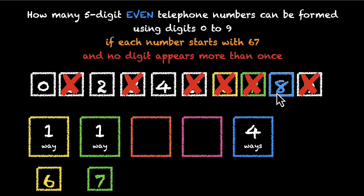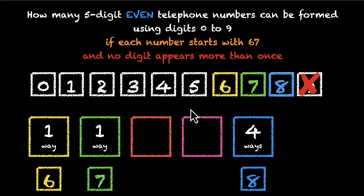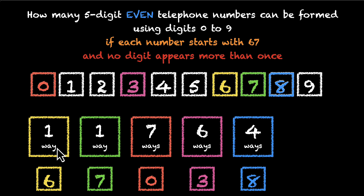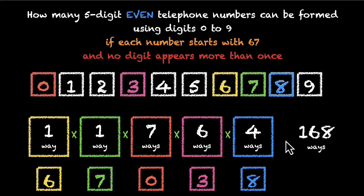Let's put in 8. Now, with 6, 7, and 8 used, we're done with 3 of the 10 digits, leaving 7 options for the next box. Put in 0 — then 6 options remain for the last box. Put in 3. So the number of ways for each box gives us: 1 × 1 × 7 × 6 × 4 = 168 five-digit even telephone numbers.